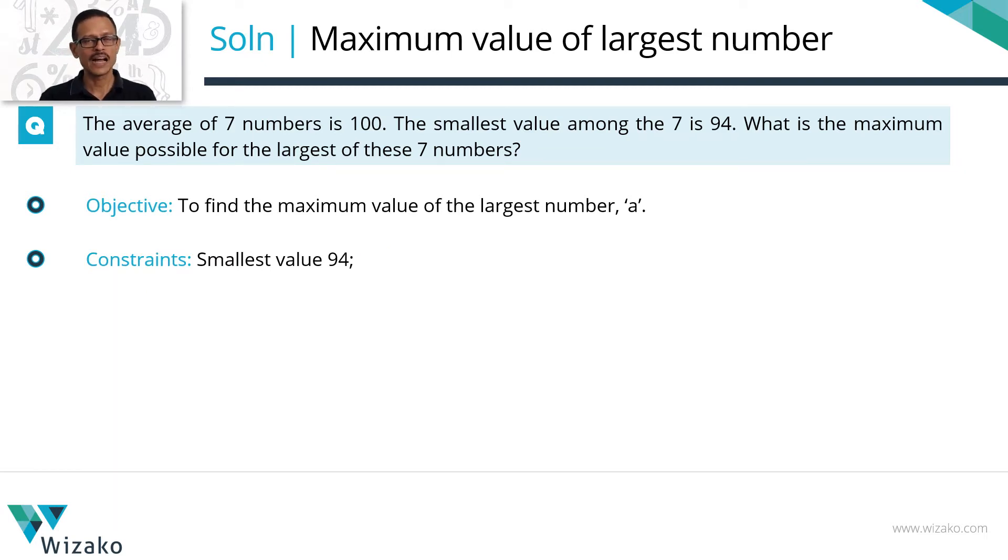All of these numbers add up to a 700, the constraint is the smallest value is a 94. Objective is to find out the maximum value possible for the largest number. So if you had to maximize A, we need to minimize the other six numbers. Maximizing A, minimizing the other numbers is none of these numbers can be less than 94.